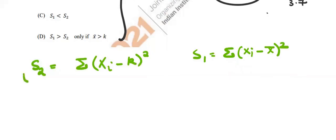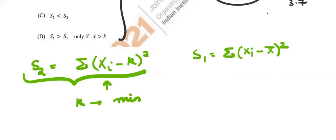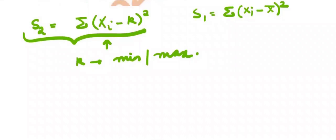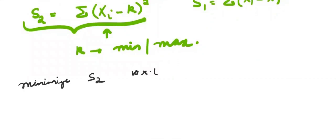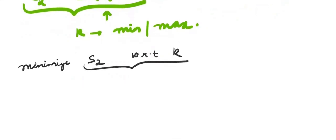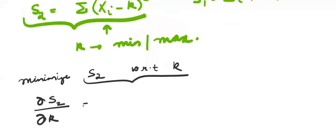If we can find a relationship between S2 and S1, the first thing to do is understand which value of k minimizes S2. So we minimize S2 with respect to k by differentiating S2 with respect to k.